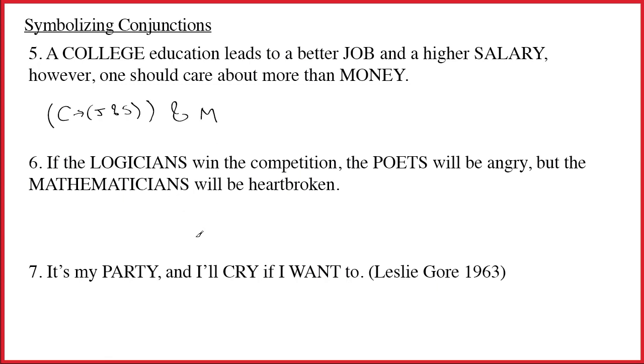Six, if the logicians win the competition, the poets will be angry, but the mathematicians will be heartbroken. All right, now I like this sentence. It's not especially difficult, but it's the type of thing I see a lot of mistakes on. It says, if the logicians win the competition, and there's an understood then at this comma, the poets will be angry, but the mathematicians will be heartbroken. So but, of course, is an and.